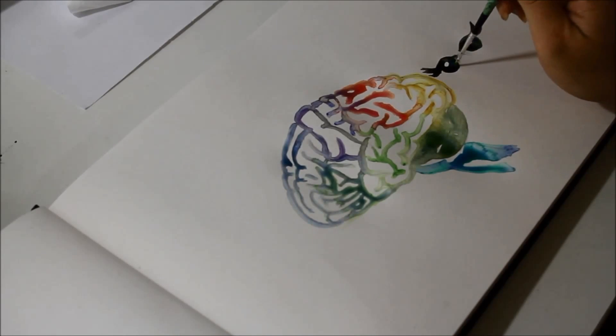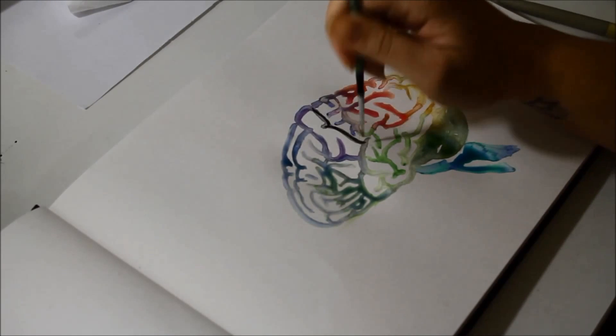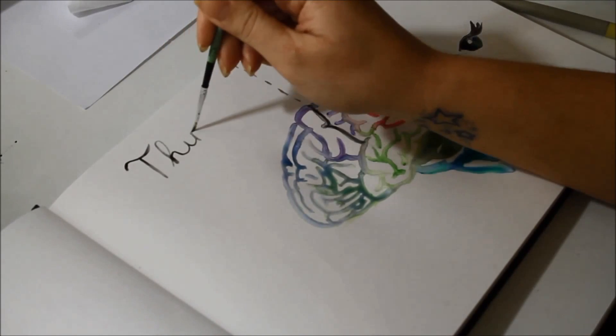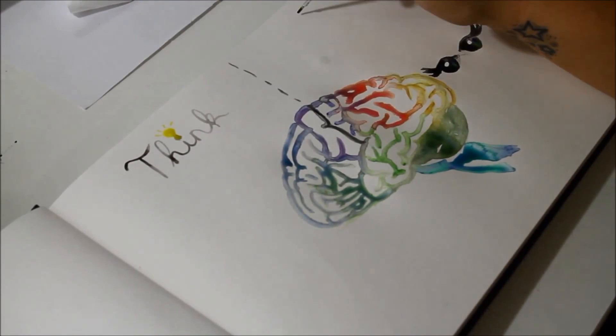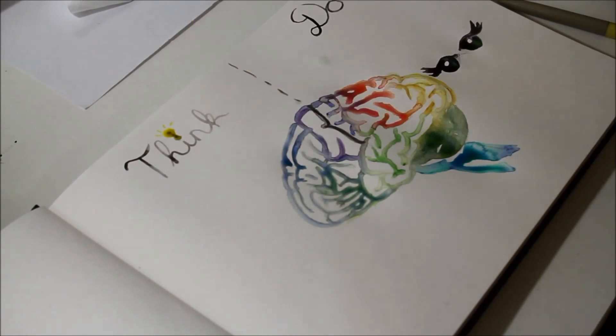In the brain, the greatest landmark is the central sulcus. Sulcus obviously being the gaps. In very simplistic terms, it divides the frontal and parietal lobes of the brain.